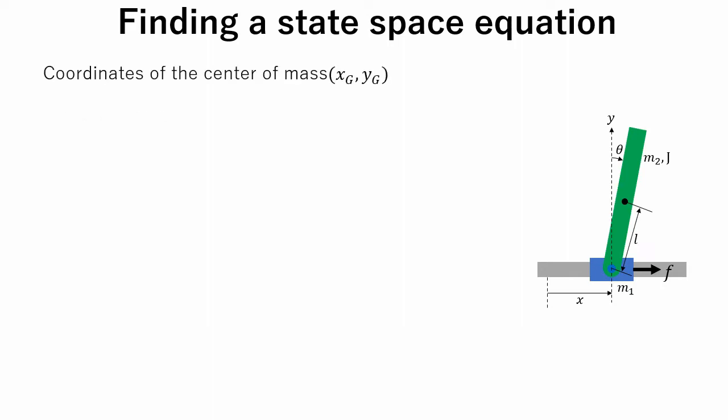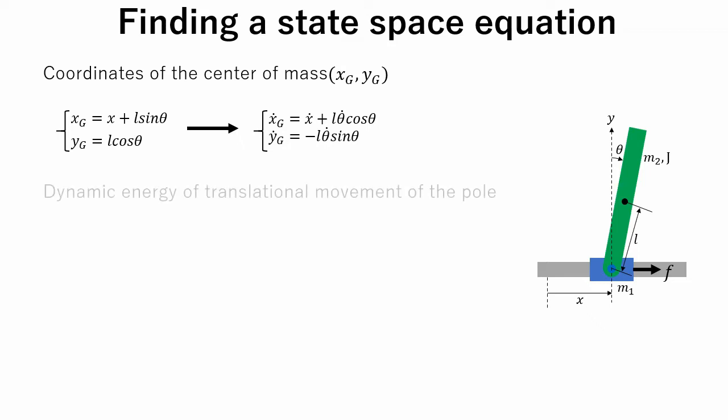Firstly, the center coordinates of gravity of the pole are obtained. Then the first derivative of the xg and yg is obtained. Note that x and theta are assumed to be functions of time. Next, dynamic energy of translational movement is obtained.